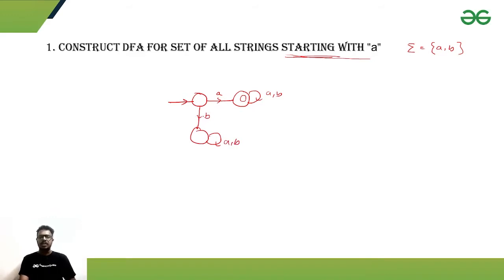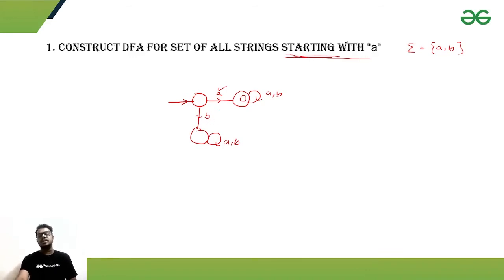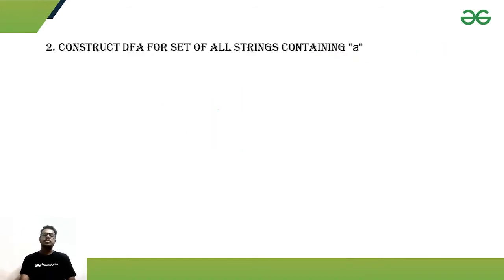If the string is starting with 'b' it should not reach the final state, because if it does, it violates our given condition. So if the string starts with 'a', it is accepted — after that 'a', any other a's or b's can come; that won't matter. The starting symbol must be 'a' instead of 'b'. This is the DFA which accepts strings starting with 'a'.